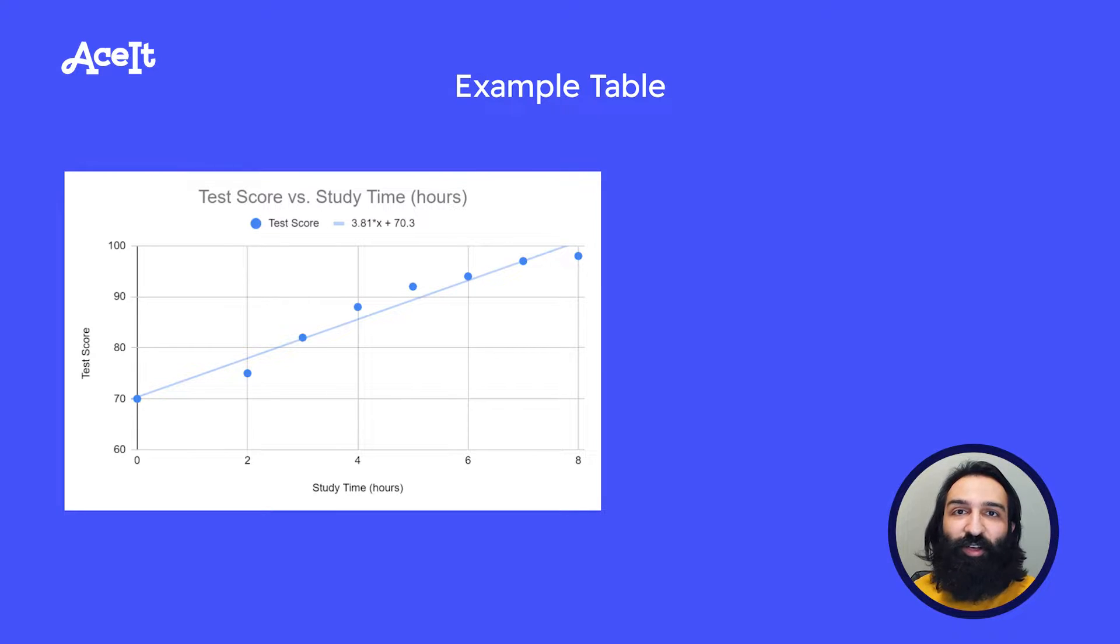We can make the same observation on the scatter plot as we made earlier based on the table. The test score is increasing as the time spent studying increases. The mathematical model for this was already calculated for us. It's known as the best fit line and it comes in slope intercept form.